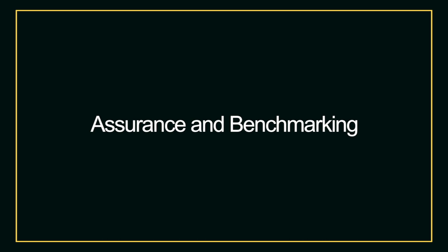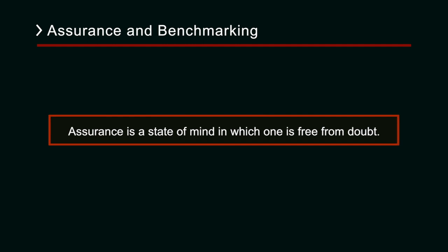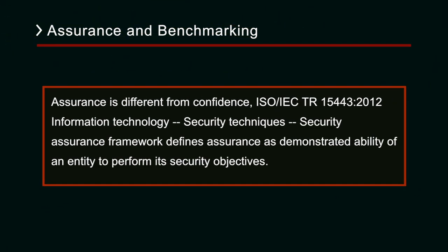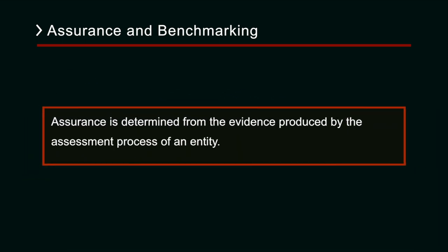In this session, first we have to understand what assurance is. Assurance can be defined as the state of mind in which one is free from doubt. It is defined in ISO/IEC TR 15443:2012, Information Technology Security Techniques, Security Assurance Framework, as the demonstrated ability of an entity to perform its security objectives. Assurance is different from confidence — it is driven by facts and determined from the evidence produced by the assessment process of an entity. We do the assessment, generate the evidence, and then we have the assurance.